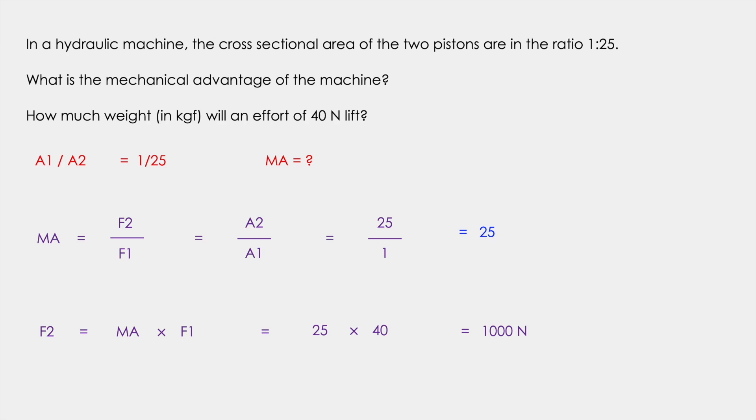However, we have to get the weight in kgf. So 1000 Newton is equal to 100 kgf since 1 kgf is equal to 10 Newton.